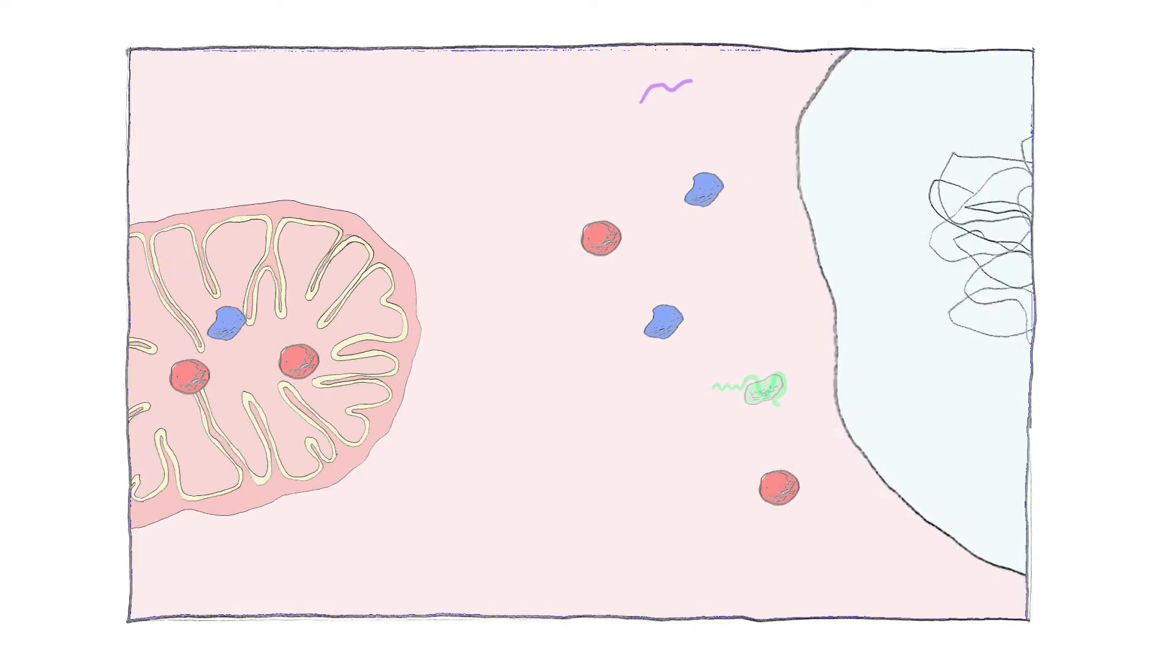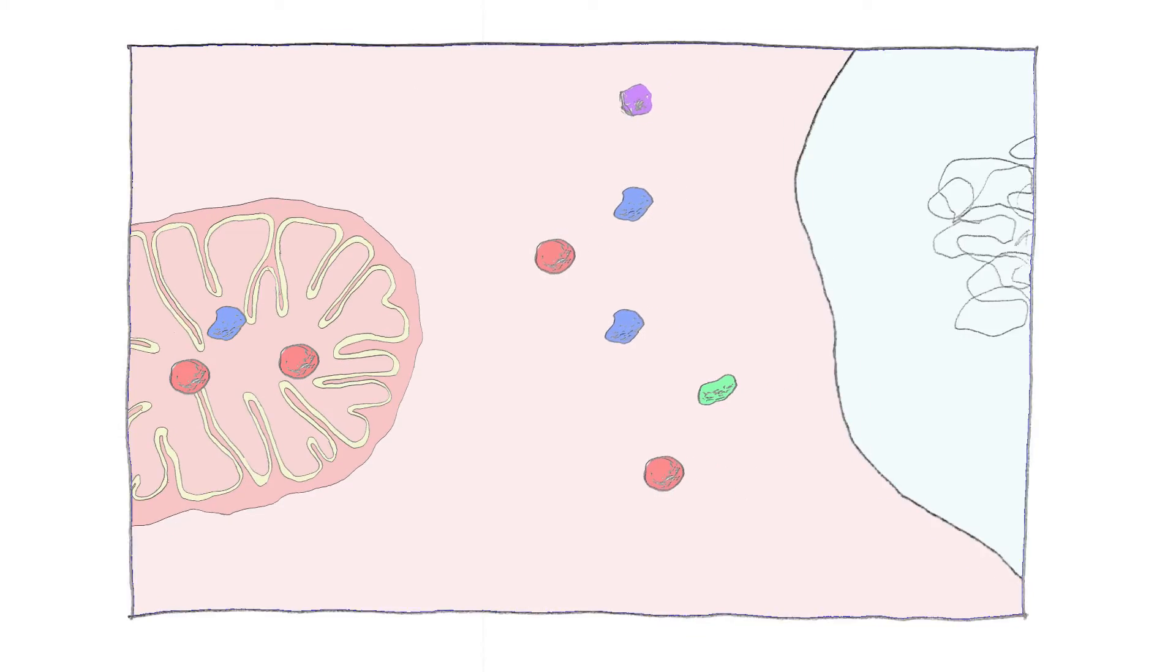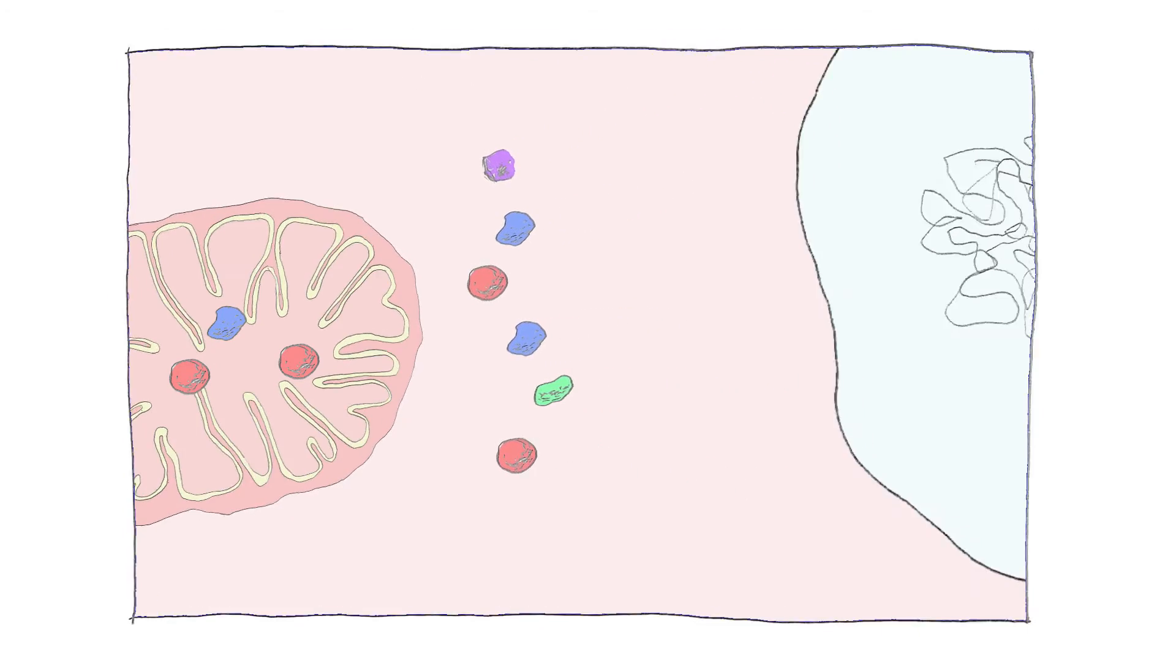And then those from the nucleus have to be imported into the mitochondria and assembled with the pieces that are made there to make this whole machine that goes on to produce energy.